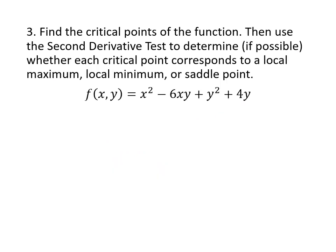Now we're going to get into trying to actually find maximum and minimum values. We first do exactly what we've already been doing — find the critical points by taking f sub x, taking f sub y, and setting them both equal to zero. In this case f sub x is 2x minus 6y, and f sub y is going to be negative 6x plus 2y plus 4.